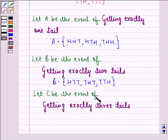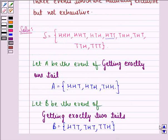And let C be the event of getting exactly three tails. So sample space for C will be TTT because that is the only element where we have exactly three tails.